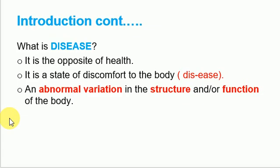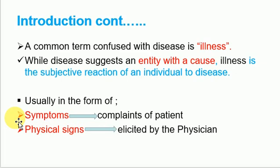Let's look at the meaning of the term disease. The term disease is the opposite of health — it is a state of discomfort to the body, which is abnormal. That's why we say disease is an abnormal variation in the structure and functions of the body. The term disease is often confused with the term illness. Illness means a subjective reaction of an individual to disease. Disease comes first, and the reaction that comes after someone has the disease is what we call illness.